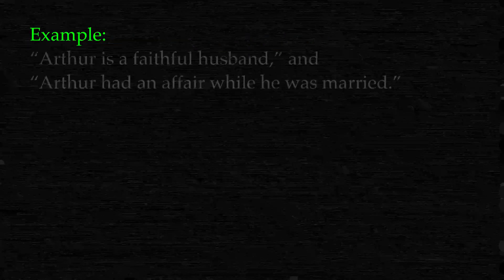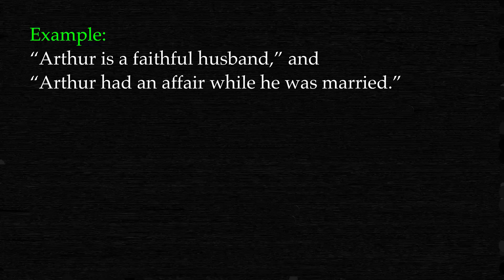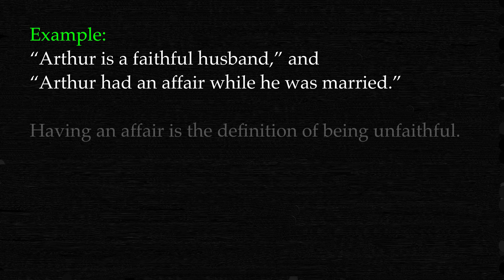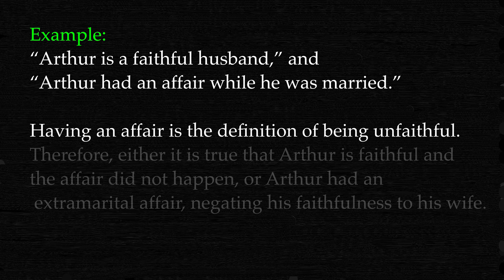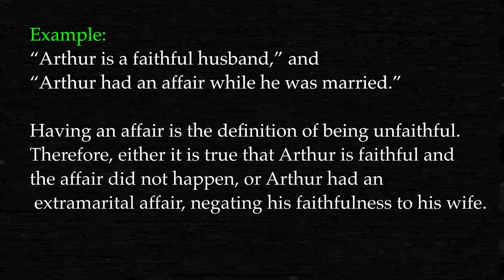Example: Arthur is a faithful husband, and Arthur had an affair while he was married. Having an affair is the definition of being unfaithful. Therefore, either it is true that Arthur is faithful and the affair did not happen, or Arthur had an extramarital affair, negating his faithfulness to his wife.